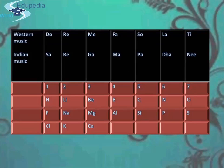Newlands divided the elements into horizontal rows of seven elements each, as shown here, but the noble gases were not known at that time. The table was formed with respect to the musical notes — in Western music: do, re, mi, fa, sol, la, ti, and again do; and similarly in Indian music: sa, re, ga, ma, pa, dha, ni, and again sa. Correspondingly, the elements were arranged in increasing order of atomic mass with similar chemical properties in the same group, as lithium, sodium, and potassium can be seen in the same row.